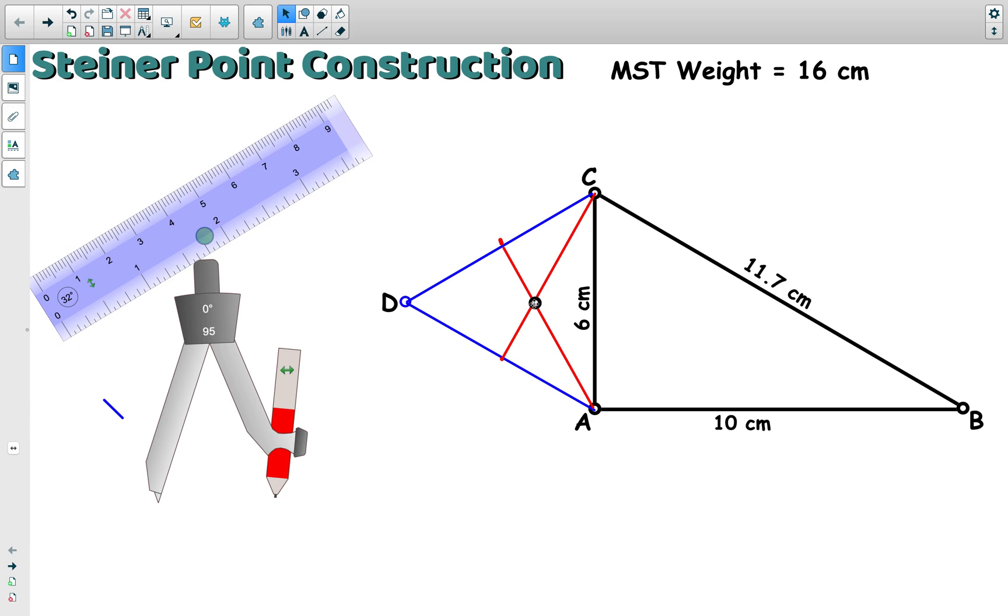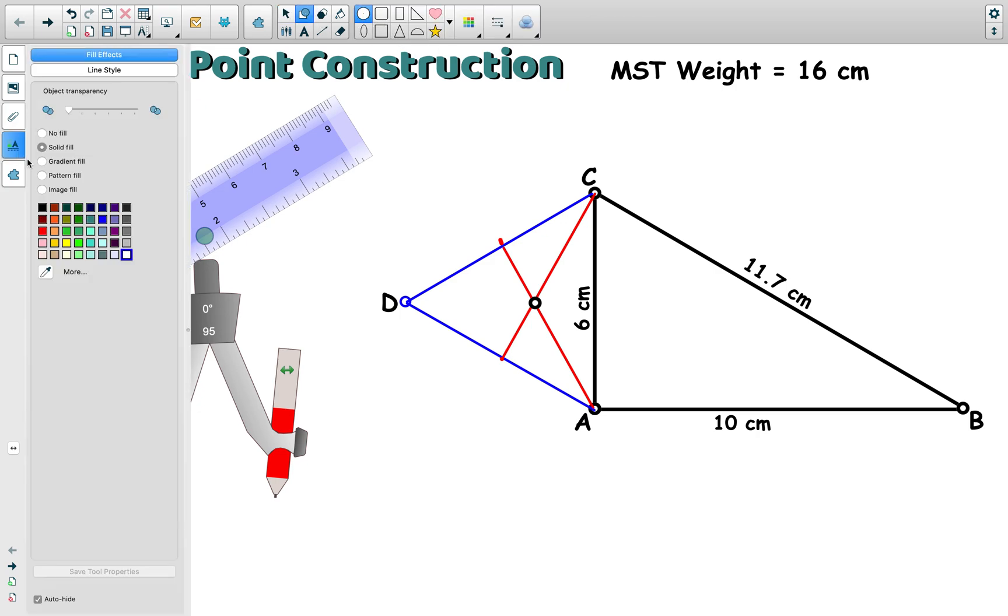And now if I draw a circle with this point as the center and the radius to point C, that circle's radius should allow us to hit points D and A also. So let's get our circle tool—and drawing a circle is much the same as using a compass.